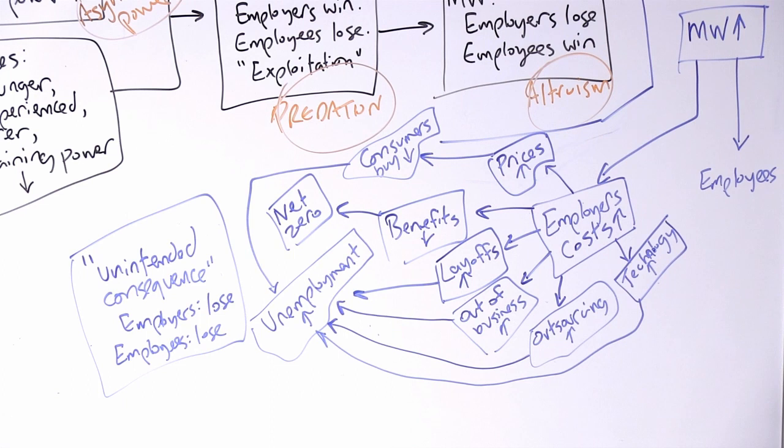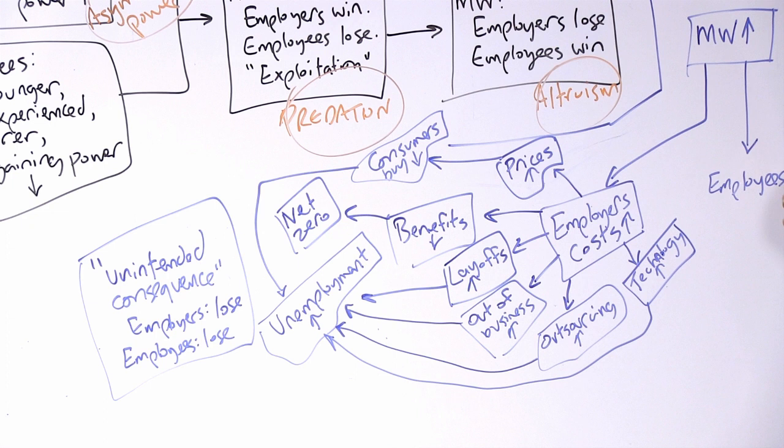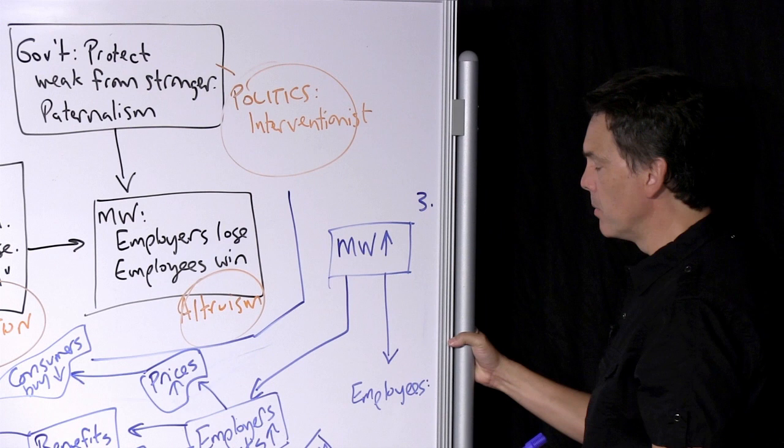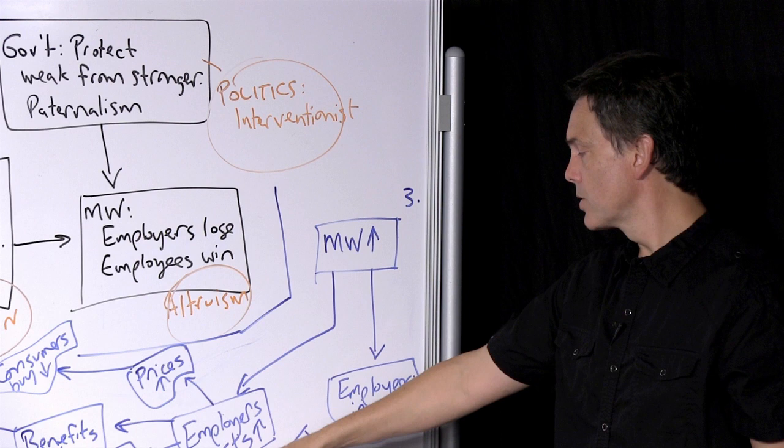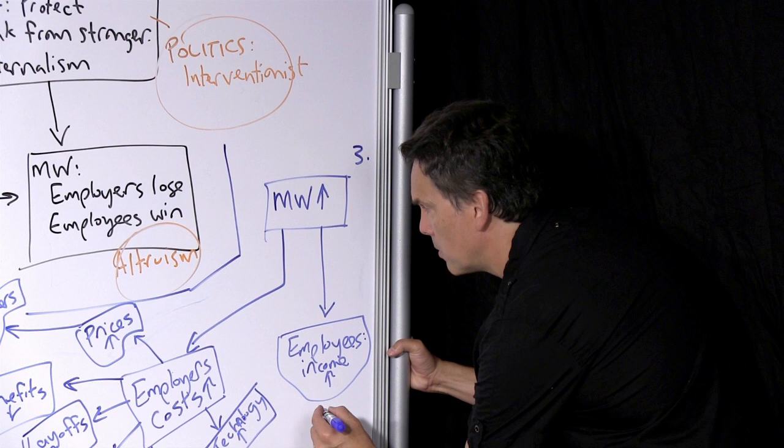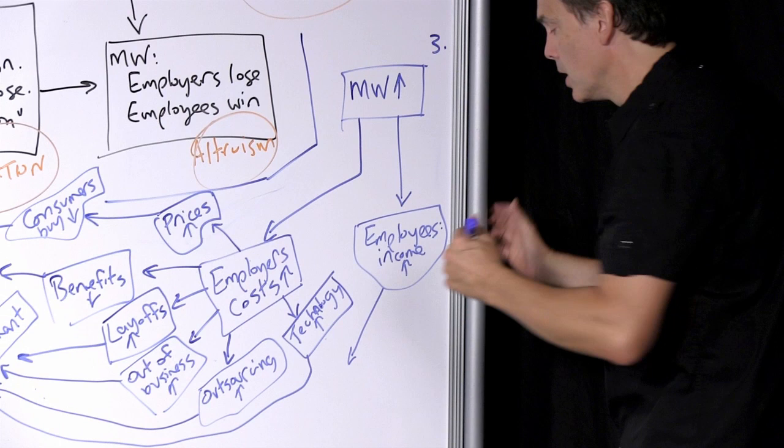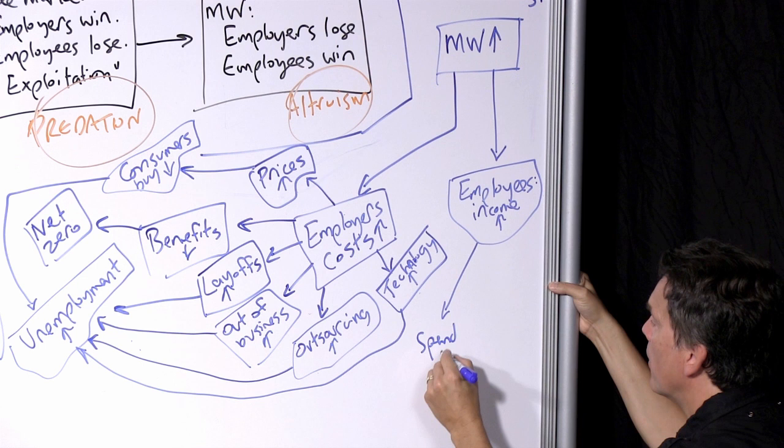We also should have a quick look at the employees' side of the equation. How do employees react as a result of the minimum wage increase? Certainly the immediate consequence here is that their income has increased. Their employers have a higher cost, but employees have higher income. As a result of this, the argument runs, what they will do is be in a position when they are consumers to spend more. They will increase their consumption.